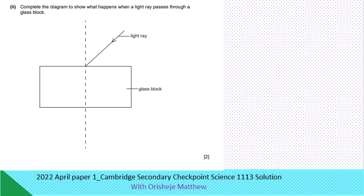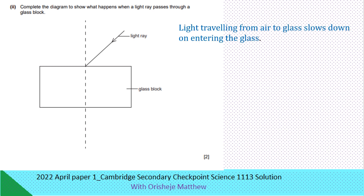Complete the diagram to show what happens when light passes through a glass block. The ray of light traveling from air to glass slows down on entering the glass, so it bends towards the normal.